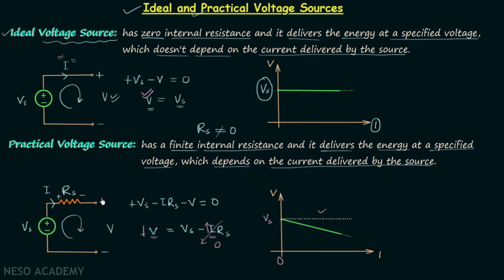This is all about the practical voltage source. From here it is clear that we cannot draw any amount of current I from the source, because for higher values of I the terminal voltage V will reduce to zero.